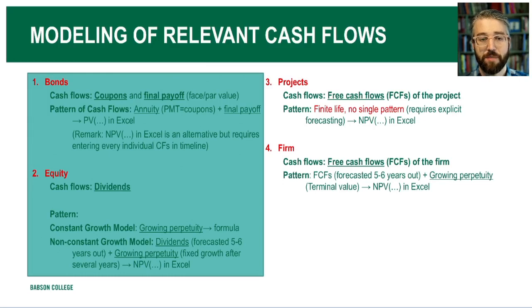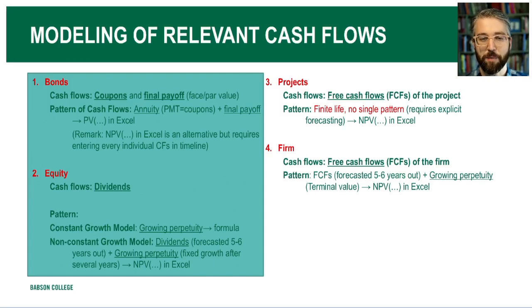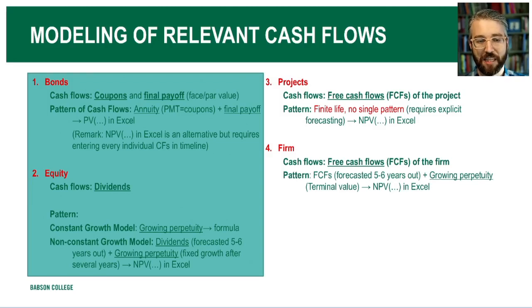The pattern of bond cash flows can be thought of as two main kinds: an annuity associated with the coupons—a series of equally spaced, equal cash flows received over the life of the bond, say every six months—and the final par value payoff at maturity. When using a financial calculator or Excel, coupon payments are entered as PMT or payments, the periodic payments that arrive once per period over the life of the annuity. The final face or par value is entered as the FV or future value—conveniently also the FV or face value of the bond—in a financial calculator or as an argument in Excel's PV or present value function.